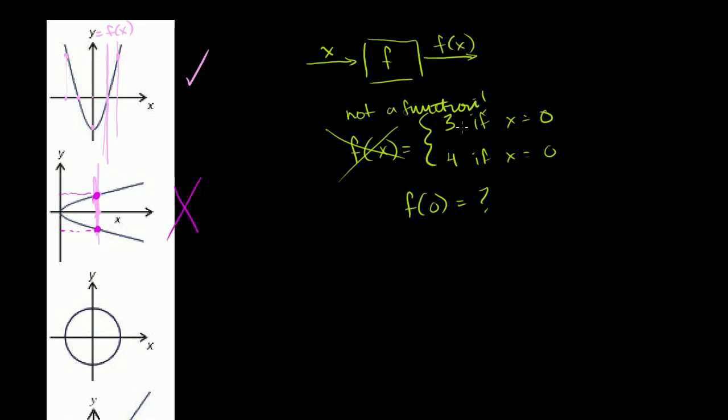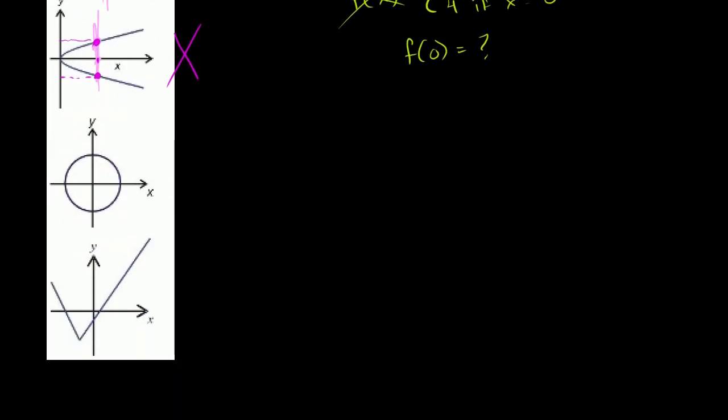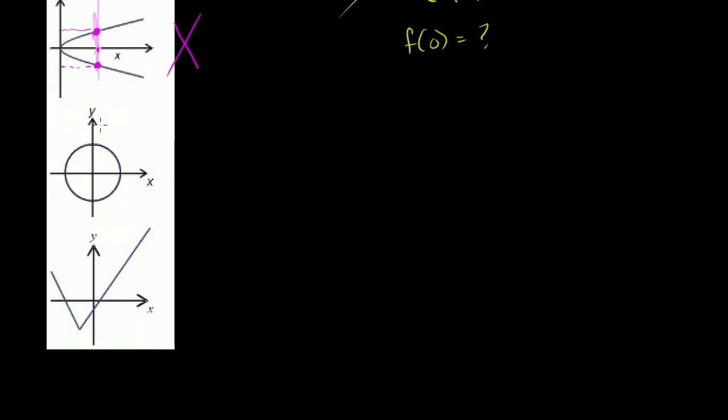So this is not a function. We're doing exactly what I described here. For a certain x, we're describing two possible y's that could be equal to f of x. So this is not a function. Over here, same thing. You draw a vertical line right there. You're intersecting the graph twice. This is not a function. You're defining two possible y values for one x value.